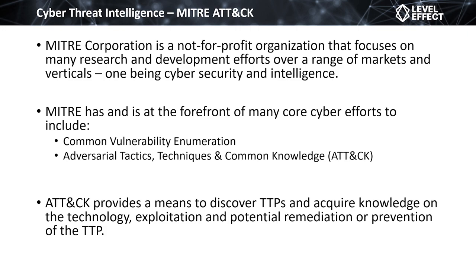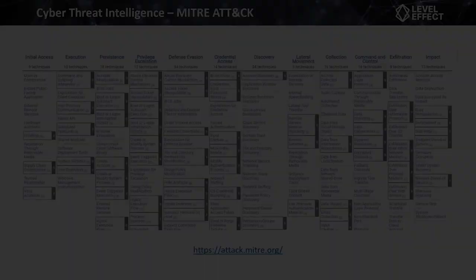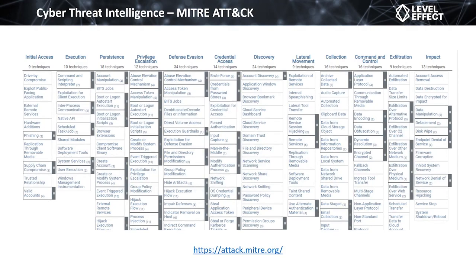The ATT&CK framework — Adversarial Tactics, Techniques, and Common Knowledge — is a matrix that allows us to look at all known TTPs in a matrix-style format. We can look by category and technique, drilling down to learn how adversaries use each technique to satisfy their objectives. In doing so, we learn how to detect the use of these TTPs and, in many cases, how to prevent them. If you navigate to attack.mitre.org, you'll find the Enterprise ATT&CK matrix with various tactics along the top such as Initial Access, Execution, Persistence, and Privilege Escalation.